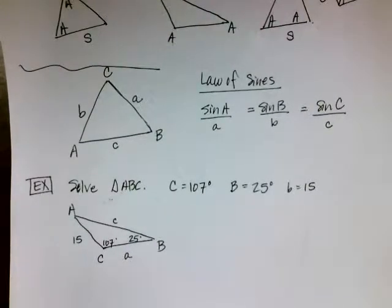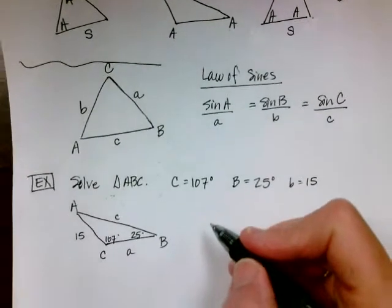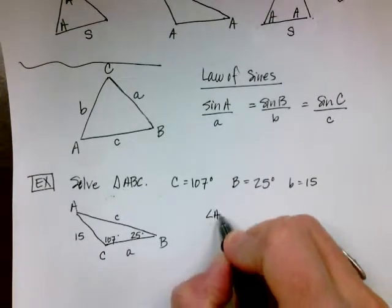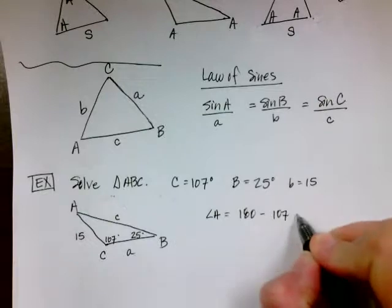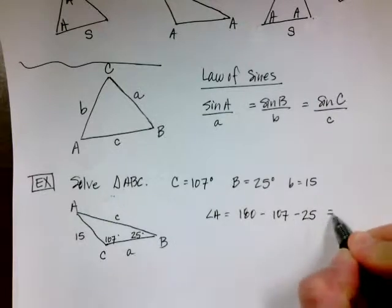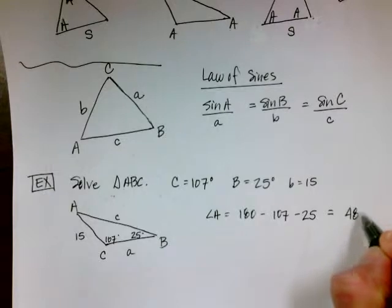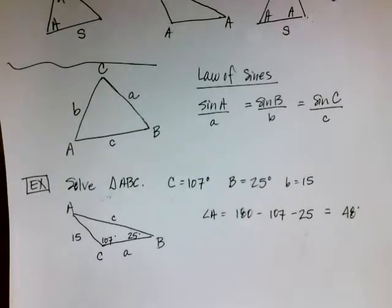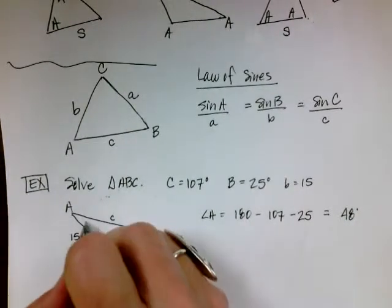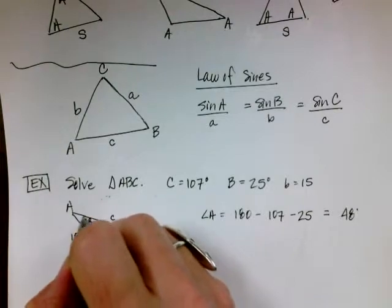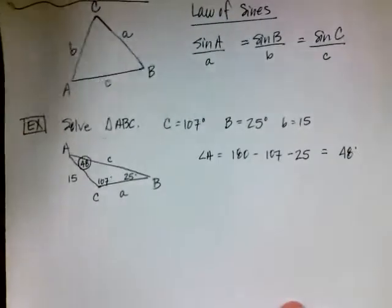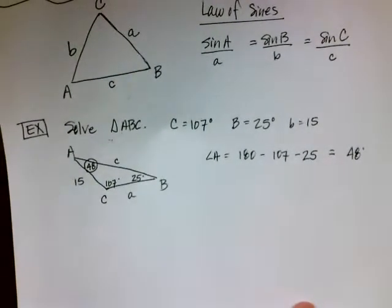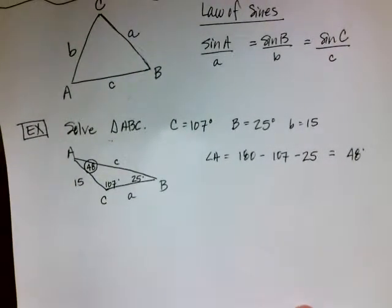The first thing I'm going to do is solve for angle A, because all I have to do is subtract from 180. So angle A equals 180 minus 107 minus 25, which gives angle A equals 48 degrees. I'm going to add it to my drawing to make life easier. But when you report your answers for an exam or a quiz, it would have to go in the answer column, not on your diagram.